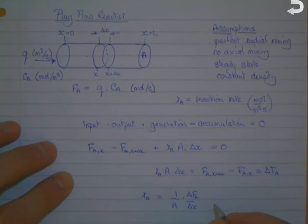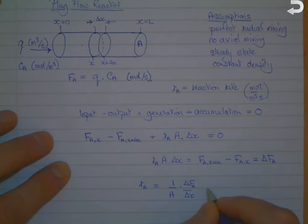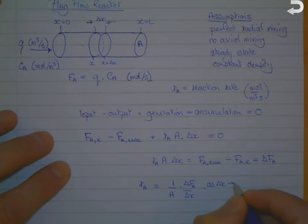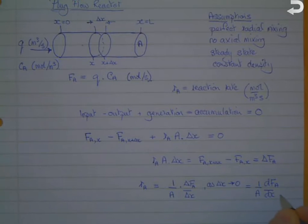And as delta x tends to zero, then that is equal to 1 over A times dFa by dx.